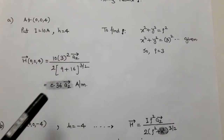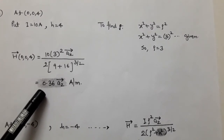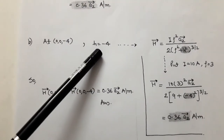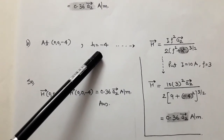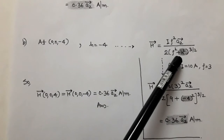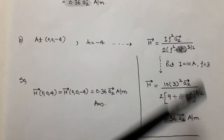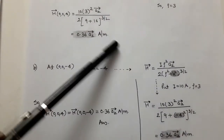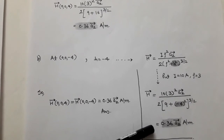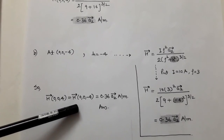The magnetic field intensity H at (0, 0, 4) is 0.36 â_z ampere per meter. Similarly, for the point (0, 0, −4), we substitute h = −4. Since h appears as h² in the formula, (−4)² = 16, which is the same positive value. We get the same answer: 0.36 â_z ampere per meter. Therefore, H at (0, 0, 4) and H at (0, 0, −4) are both equal to 0.36 â_z A/m.